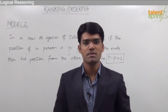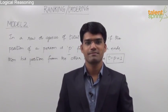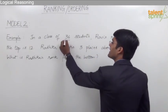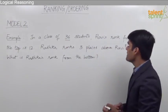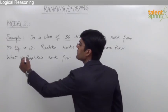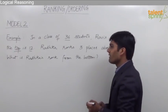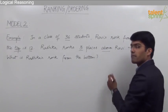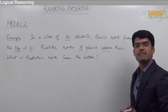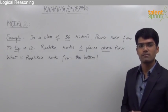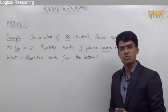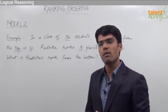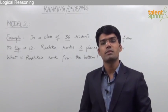Let us now take an example based on this point. In a class of 36 students, Ravi's rank from the top is 12. Radhika ranks three places above Ravi. We are supposed to find out Radhika's rank from the bottom end of a class which has 36 students.